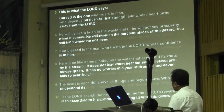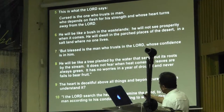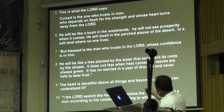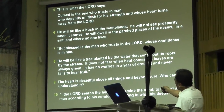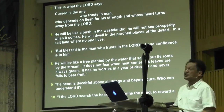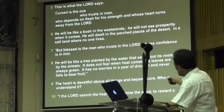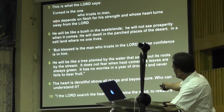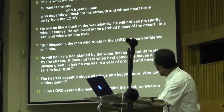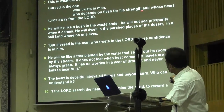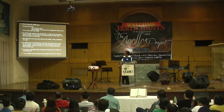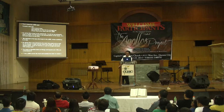Starting from 'This is what the Lord says' — 'Cursed is the one.' The main subject is 'the cursed one.' The first description is 'who trusts in man' — we place 'who' under the subject 'one.' Then 'who depends on flesh for strength' — the word 'who' goes under the same subject. And 'whose heart turns away from the Lord' — again the same subject, the cursed one.